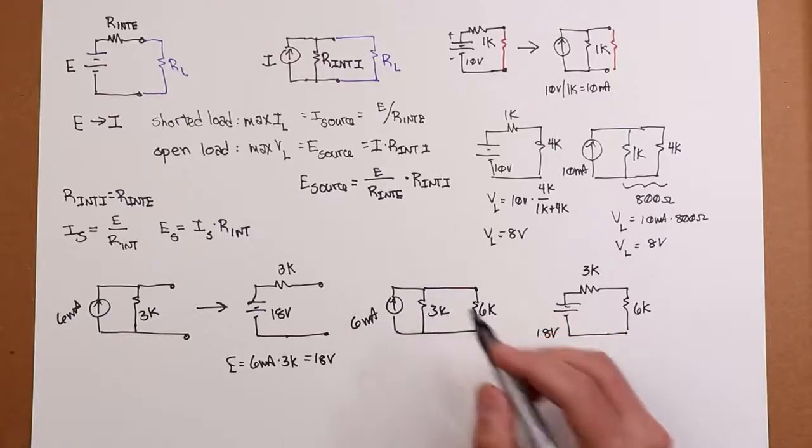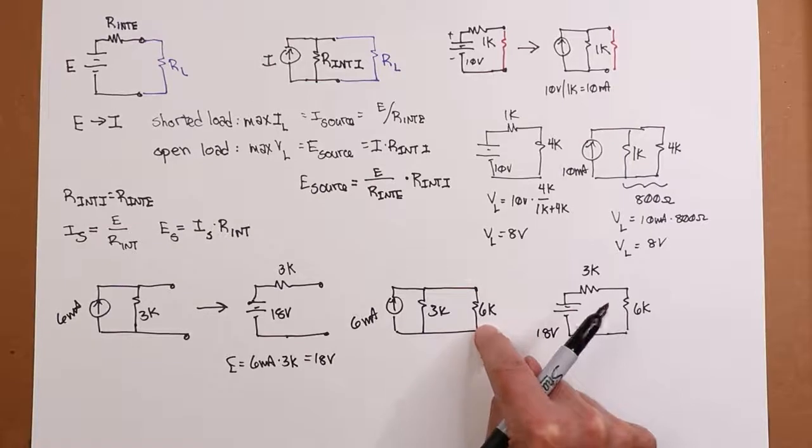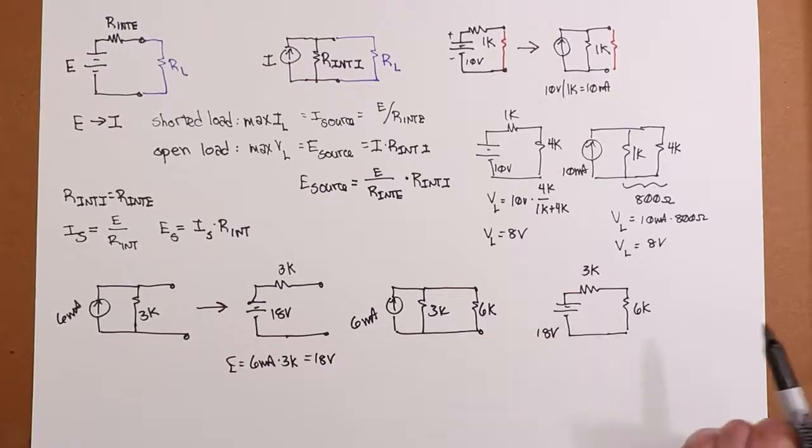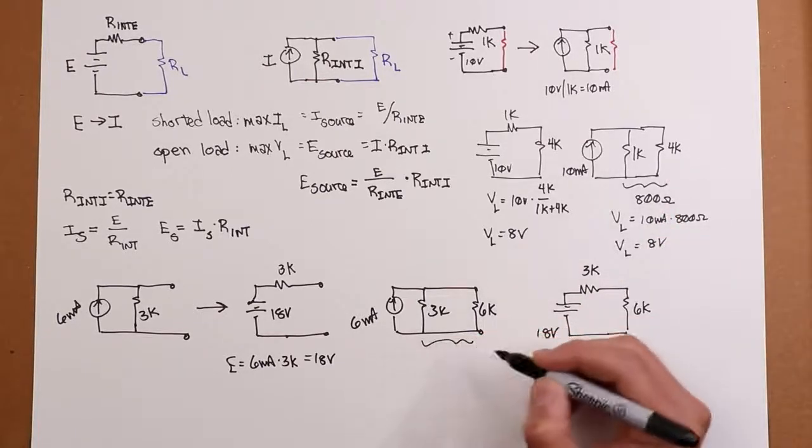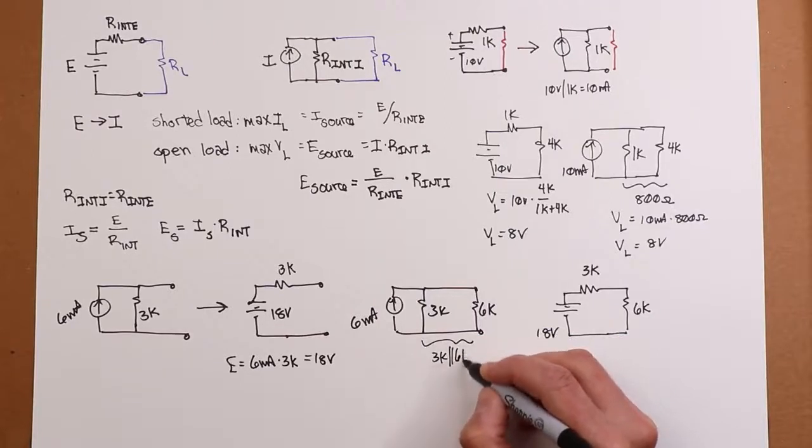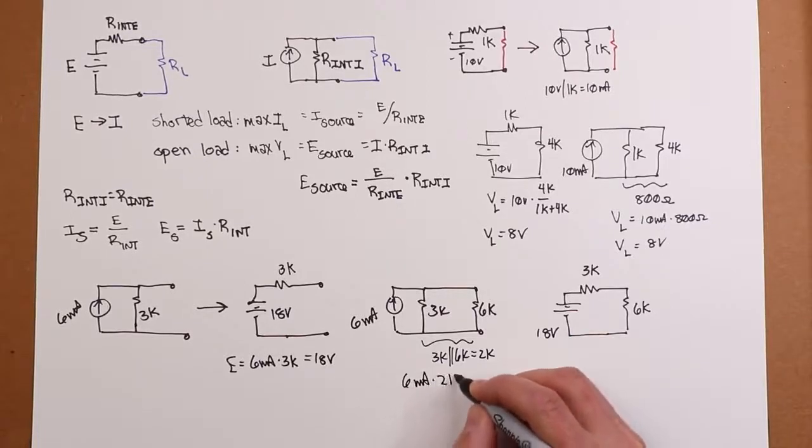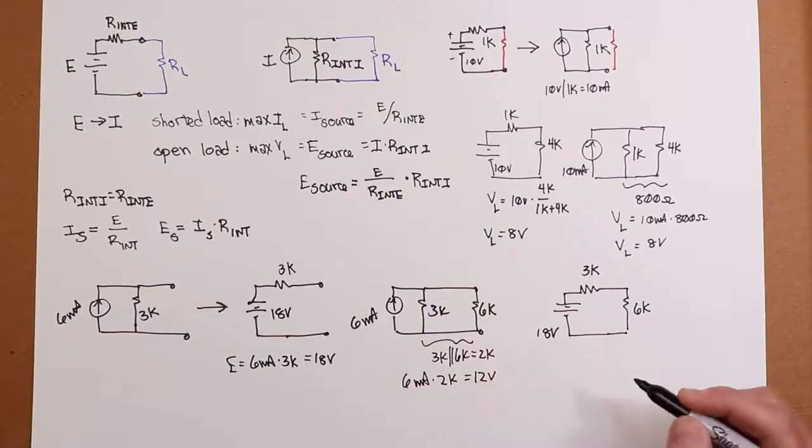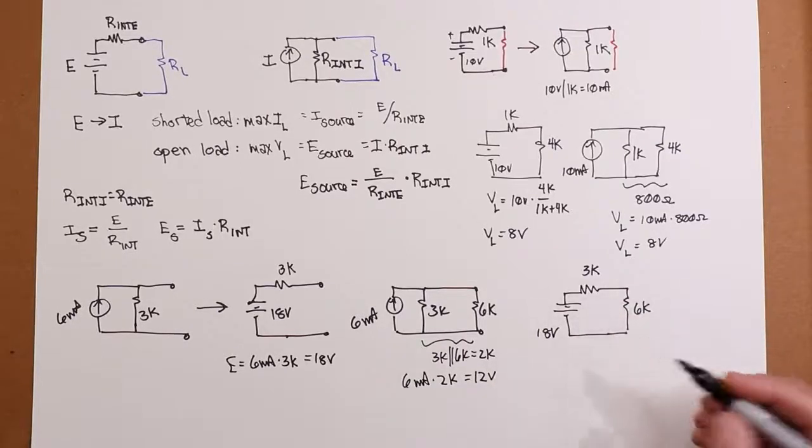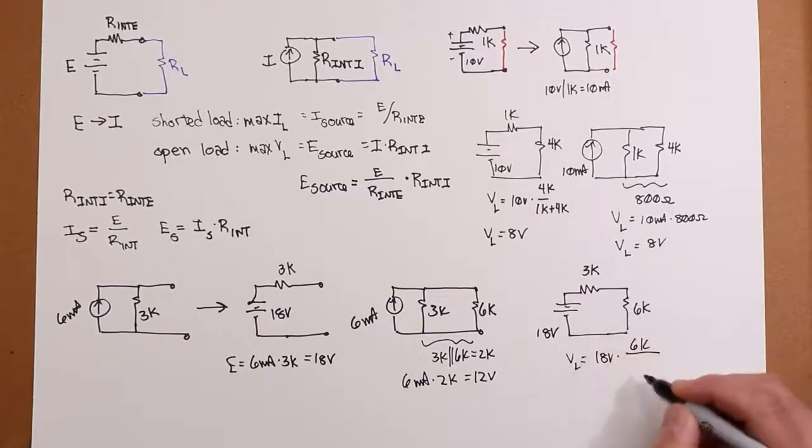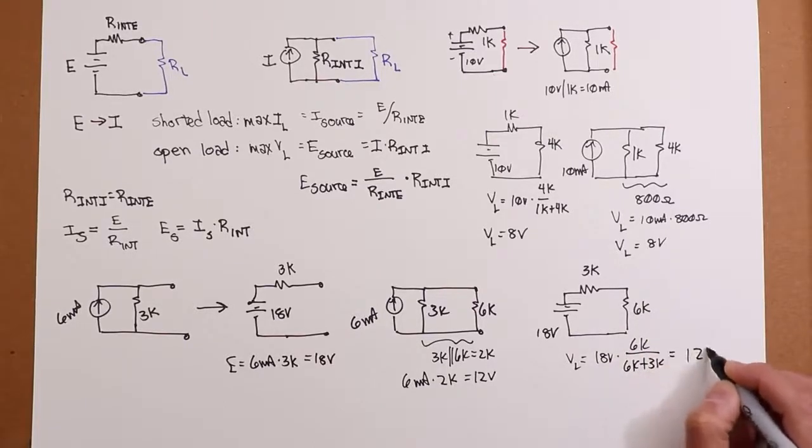Or if you prefer, you could say 3K in parallel with 6K is 2K. Kind of like I did over here. Either way. 6 mils times 2K says the voltage across my 6K load would have to be 12 volts. Now, moving over here, that's just a voltage divider. So VL is going to be the 18-volt source times the ratio of the thing you're interested in, 6K over the total. So that's two-thirds of 18, which, lo and behold, is 12 volts. Beautiful. Can't complain about that.